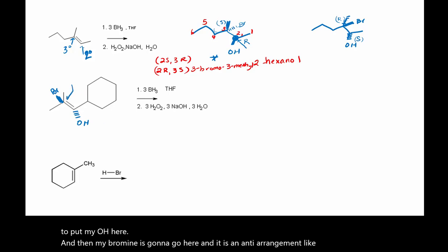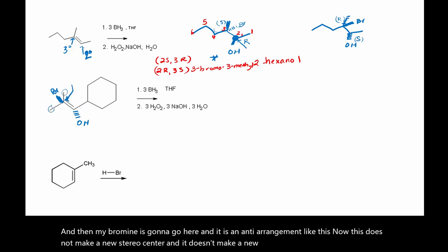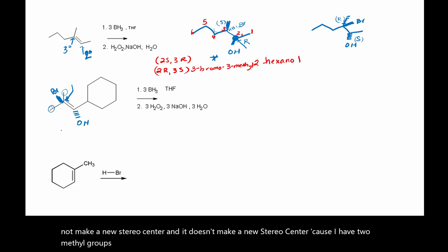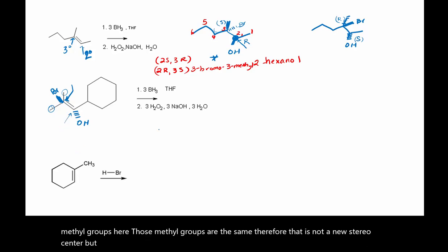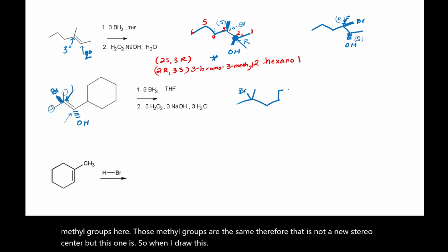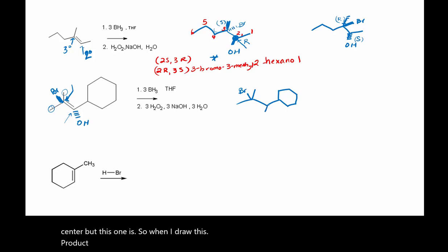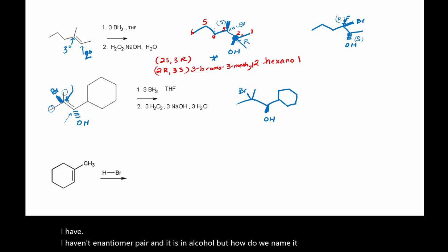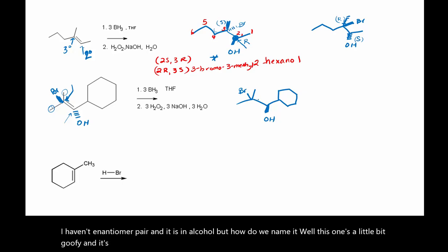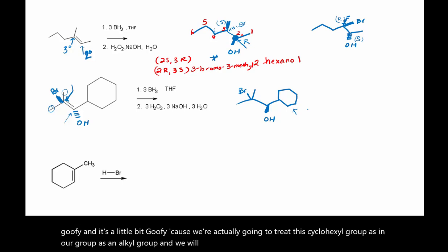Now this does not make a new stereocenter, and it doesn't make a new stereocenter because I have two methyl groups here — those methyl groups are the same. Therefore that is not a new stereocenter. But this one is. So when I draw this product, I have an enantiomer pair. It is an alcohol, and we're actually going to treat this cyclohexyl group as an alkyl group and name it as a cyclohexyl group.